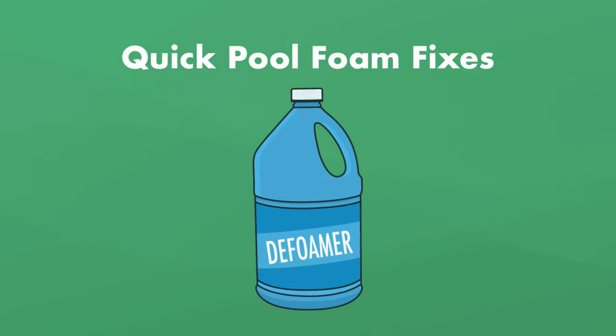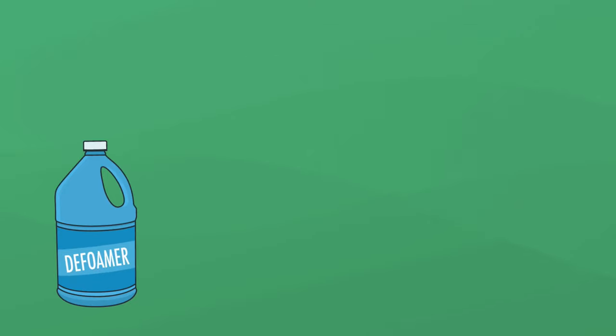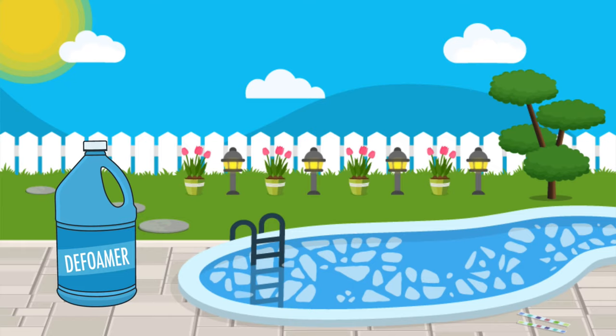Okay, so now you know how to treat and prevent pool foam. But what do you do if you need a fast remedy? Well, if you're in a pinch, like say you're having guests coming over, you can use an anti-foam chemical, also called a defoamer. It's a quick cure for pool foam, but remember, it only treats the symptom, not the cause. You still need to address the underlying problem eventually.